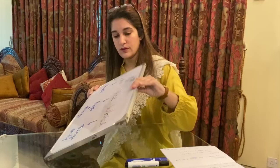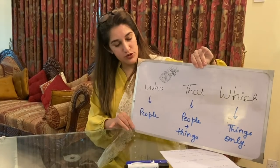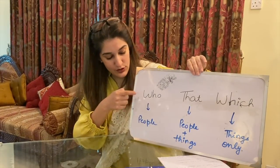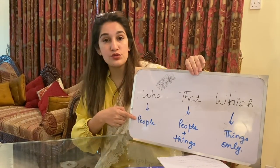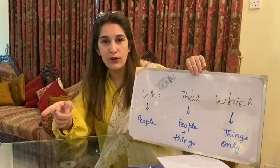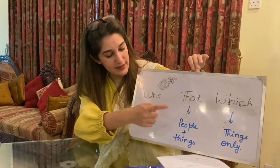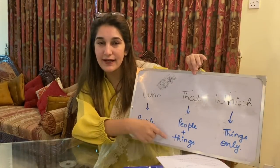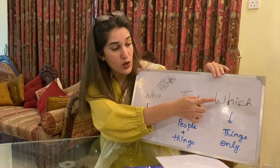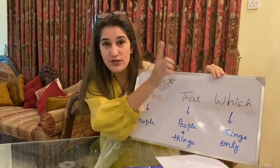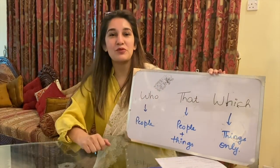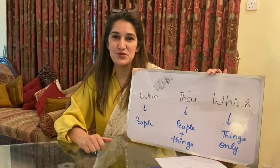The last and most important thing: 'who' is always used for people — 'the boy who lives in Lahore'. 'That' can be used for people and things, but only with restrictive relative clauses. 'Which' is used only for things, with non-restrictive relative clauses. That would be all for today's lecture — I hope it was useful.